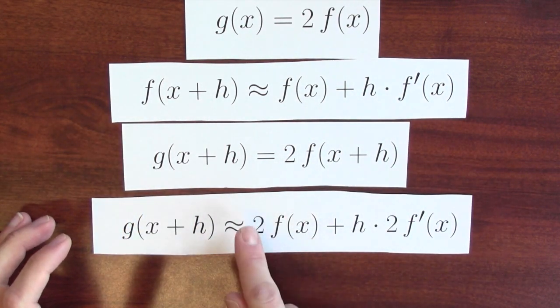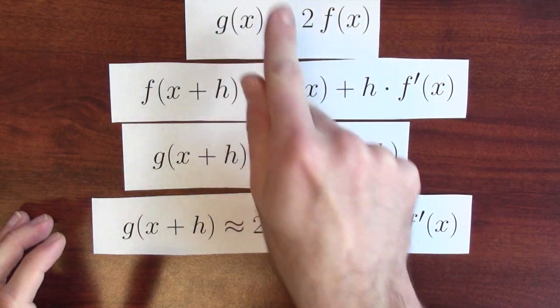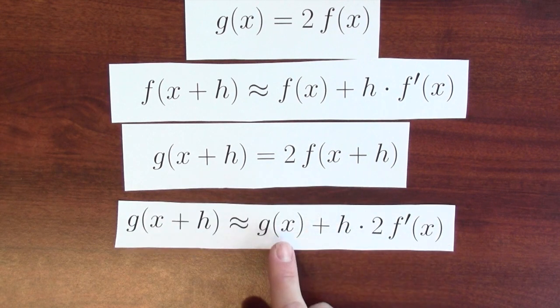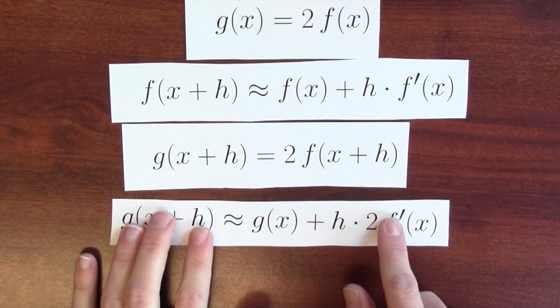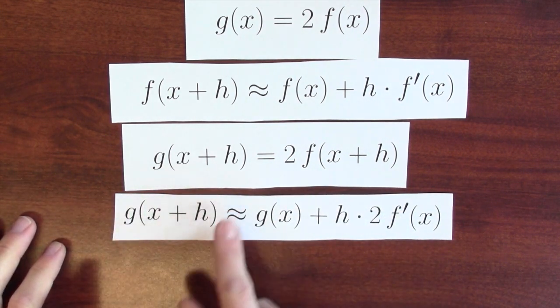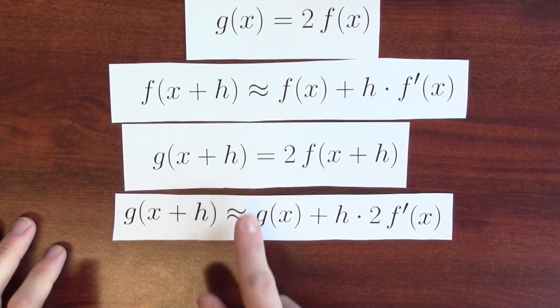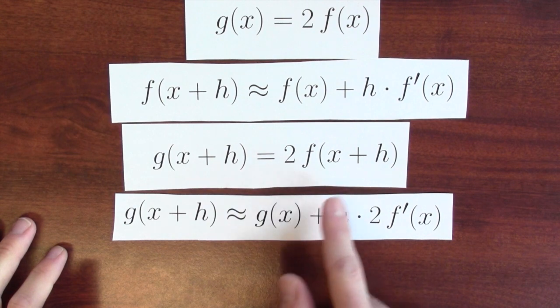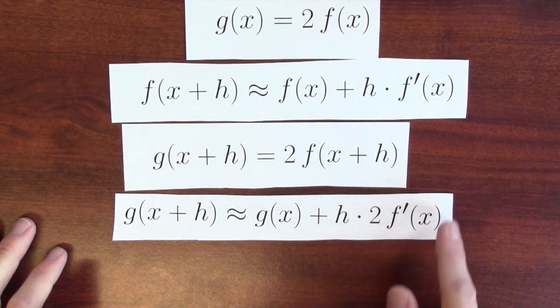I can make this a little bit nicer. Since twice f of x is g of x, I can replace this two times f of x with g of x. And this is really looking good. This is telling me that g's output at x plus h is about g's output at x plus how much I change the input by times some quantity.